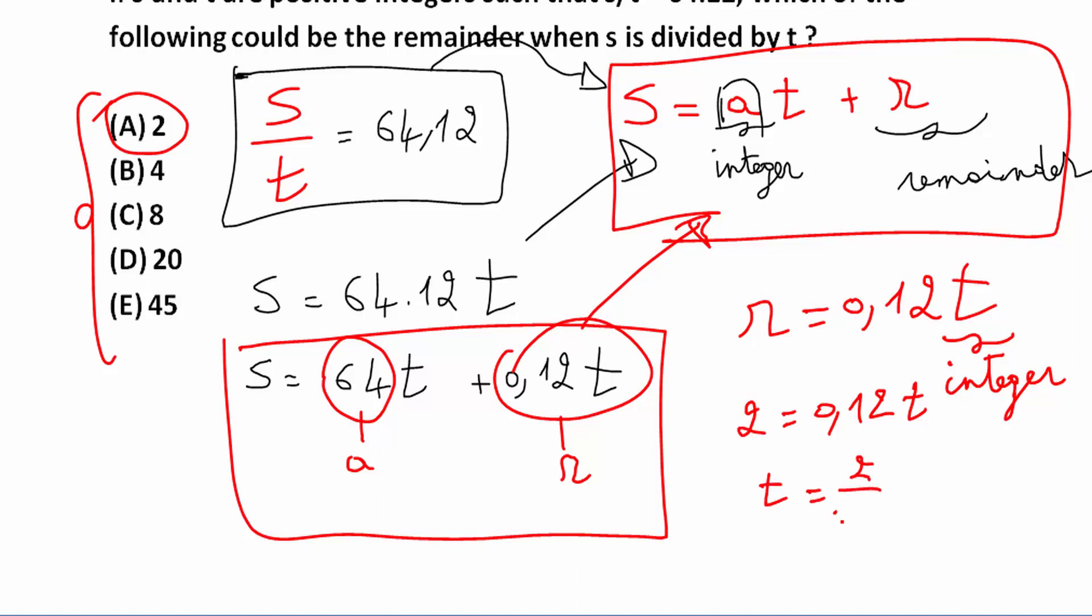T is equal to 2 divided by 0.12, it's equal to 200 divided by 12. I multiplied by 100 the numerator and 100 in the denominator. So if I need to simplify this, it's 100 divided by 6.